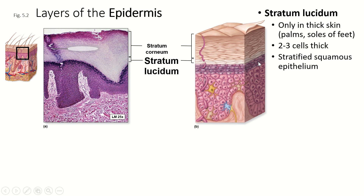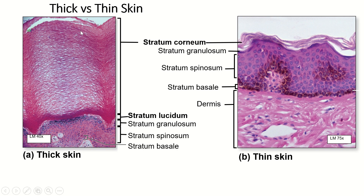On thin skin — the skin on the rest of your body — you don't see a stratum lucidum. So this is the difference between thick skin, where you can see how thick the stratum corneum is and this tiny little stratum lucidum, versus thin skin with a much thinner stratum corneum and no stratum lucidum — it just has the stratum granulosum. So the stratum lucidum is only found in thick skin, which is the skin on the palms of the hands and the soles of the feet.